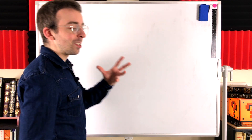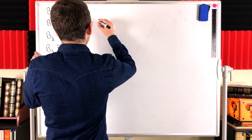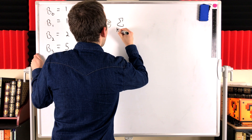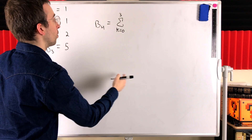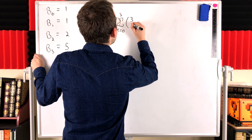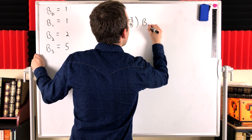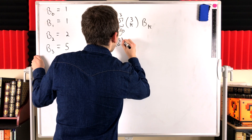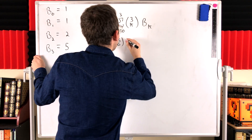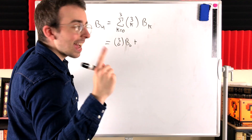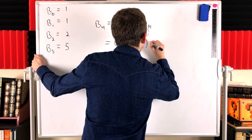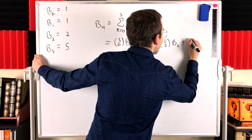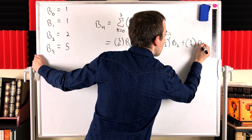Here's the recurrence relation — we're going to use it and then explain it. To calculate B4, all we've got to do is take the sum from k equals zero to k equals three (one less than four) of three choose k multiplied by the bell number Bk. So this is: three choose zero times B0, plus three choose one times B1, plus three choose two times B2, plus three choose three times B3.